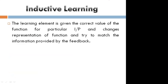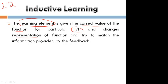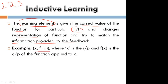Here we are taking one learning element and finding the correct values for a function for particular inputs. For the first input you get one representation, for the second input you get another representation of the function. For different inputs we find different representations until we get the correct information.